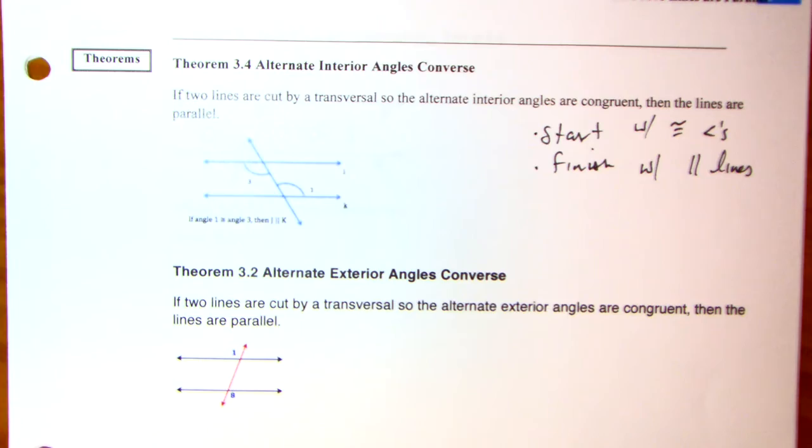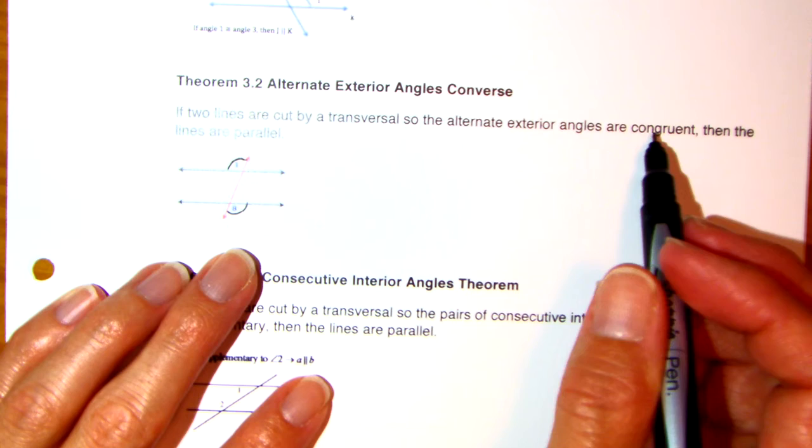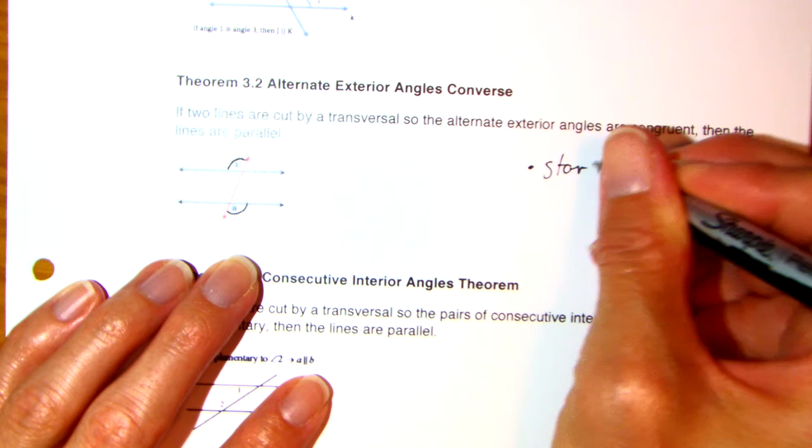If you have two lines cut by a transversal — they don't say anything about the lines — and the alternate exterior angles are congruent, then the lines are parallel. Start with congruent angles.